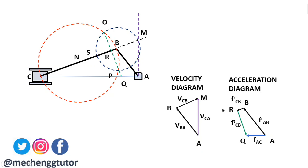The small segment RB represents the radial acceleration component of the connecting rod BC, denoted as fr_CB. By measuring these dimensions in the velocity or acceleration diagram you can find the velocity and acceleration components. To find the resultant acceleration of connecting rod BC, join B to Q with a straight vector — this gives the acceleration component of BC. With these two circles, we obtain the velocity and acceleration diagram — that is Klein's construction.